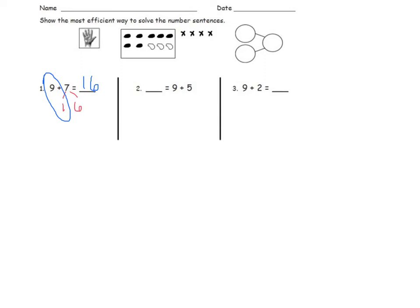Problem number 2 asks us to solve blank equals 9 plus 5. To solve this problem, it is more efficient to make 10. To do this, I will break 5 into 1 and 4 by creating a number bond. So 5 is broken into 1 and 4. I know that 9 and 1 together make 10. So 10 plus 4 together makes 14. 9 plus 5 is equal to 10 plus 4, as they both equal 14.